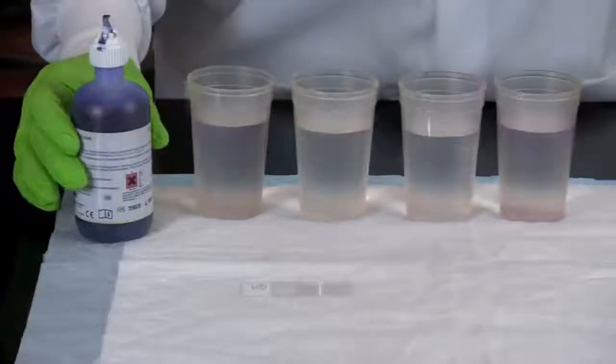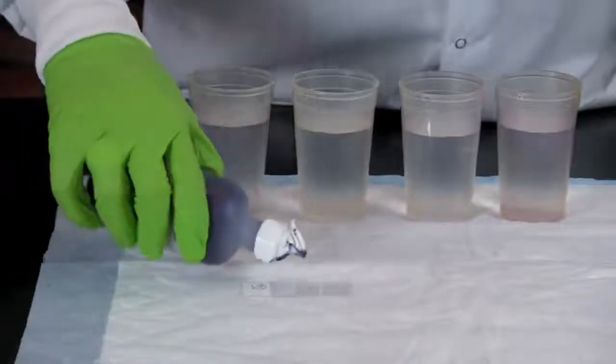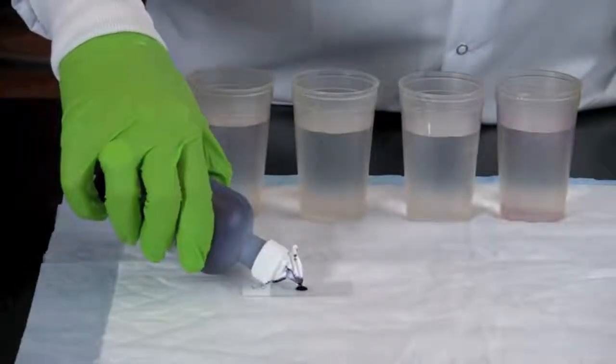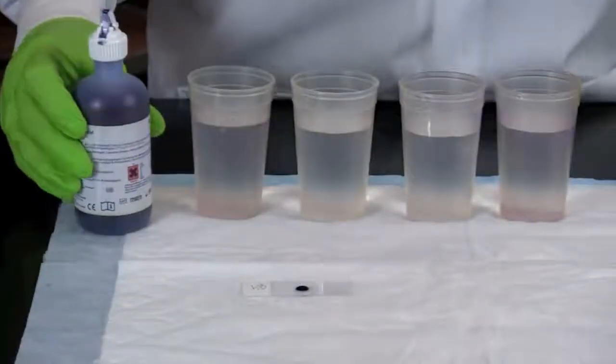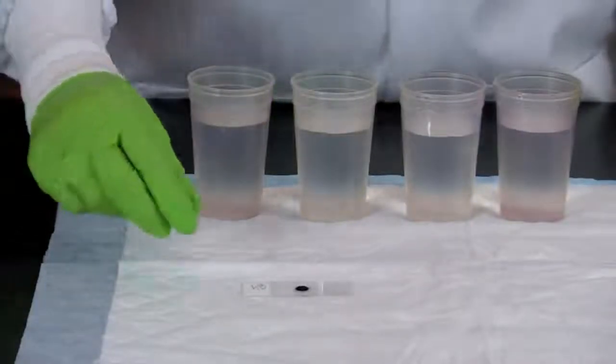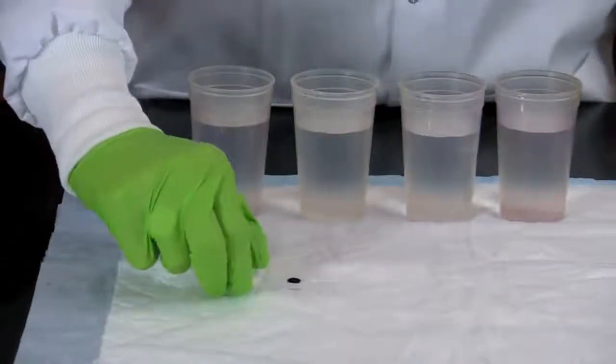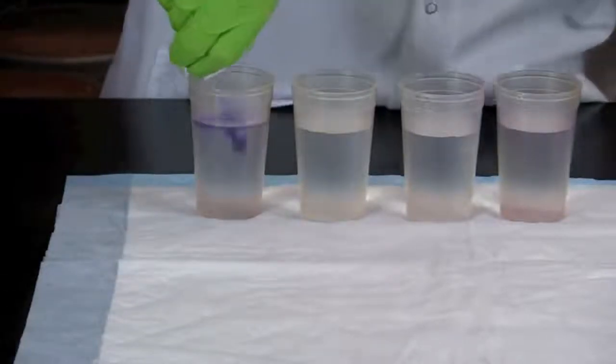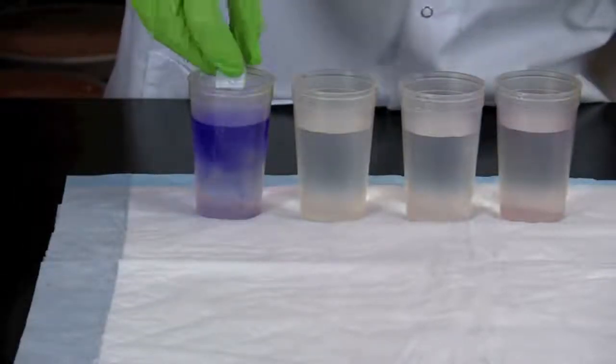Add a few drops of crystal violet stain to the bacteria until the wax circle is filled with stain. Let this stand for one minute. Rinse the slide by dipping it in a beaker of water two to three times until most of the stain has been washed off.